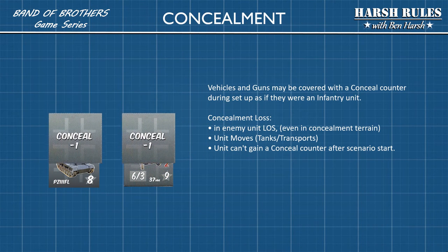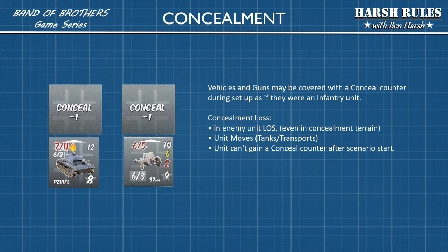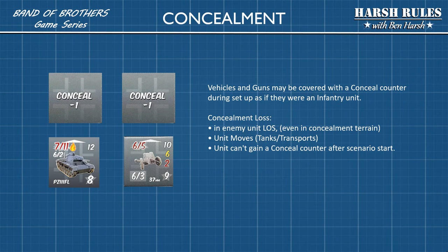Just like squads, vehicles and guns can also take advantage of concealment. They may be covered with a conceal counter during setup as if they were a regular infantry unit. However, they can lose their concealment if they're in an enemy unit's line of sight, even if they're in concealment terrain, if the unit moves (at least for tanks and transports), or if the unit can't gain a conceal counter after the scenario starts.